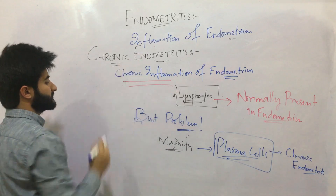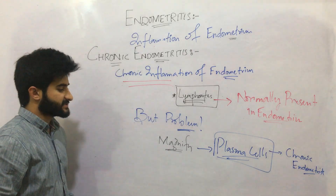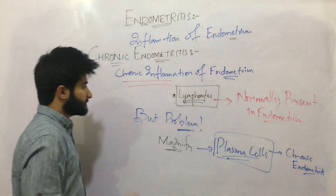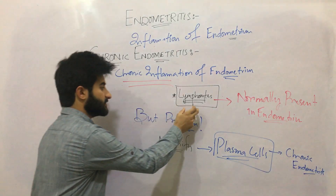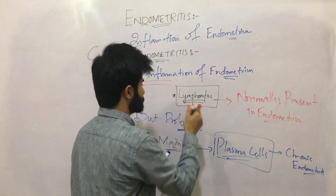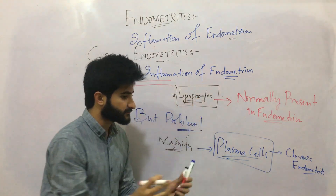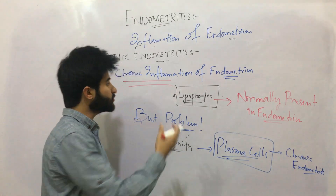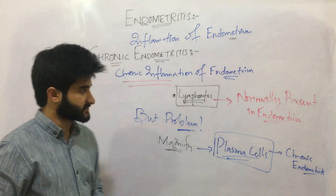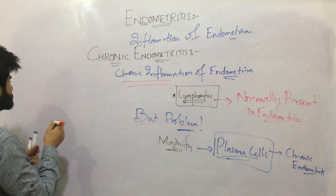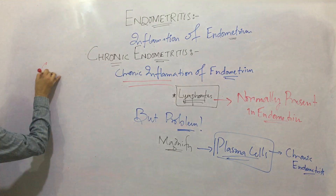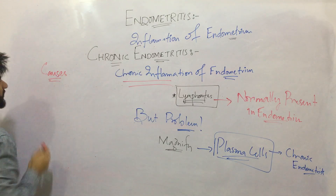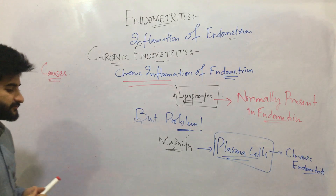So the definitive diagnosis of chronic endometritis is based on plasma cells. Seeing a lot of lymphocytes can give us a clue toward chronic endometritis. Now, what are the causes of chronic endometritis?